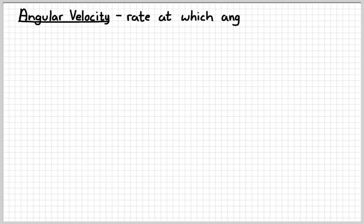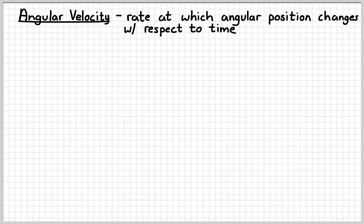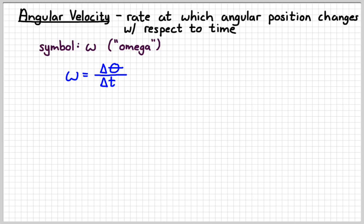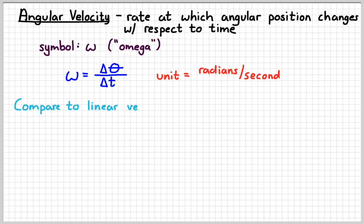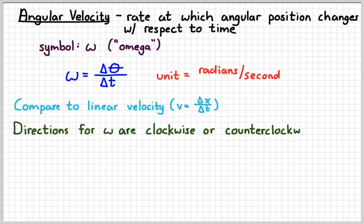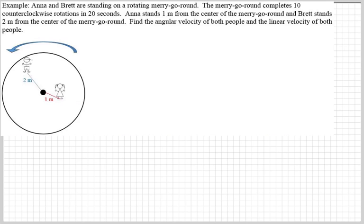If things are moving, obviously we want to know how fast they're going. We're going to redefine velocity for angular displacement to be the rate at which angular position changes with respect to time — we call that the angular velocity. We give it the symbol omega, a lowercase Greek letter. Angular velocity omega is just the change in angle over the change in time, measured in radians per second. Compare that to linear velocity — change in linear position over time, measured in meters per second. For direction, our only choices are clockwise and counterclockwise.